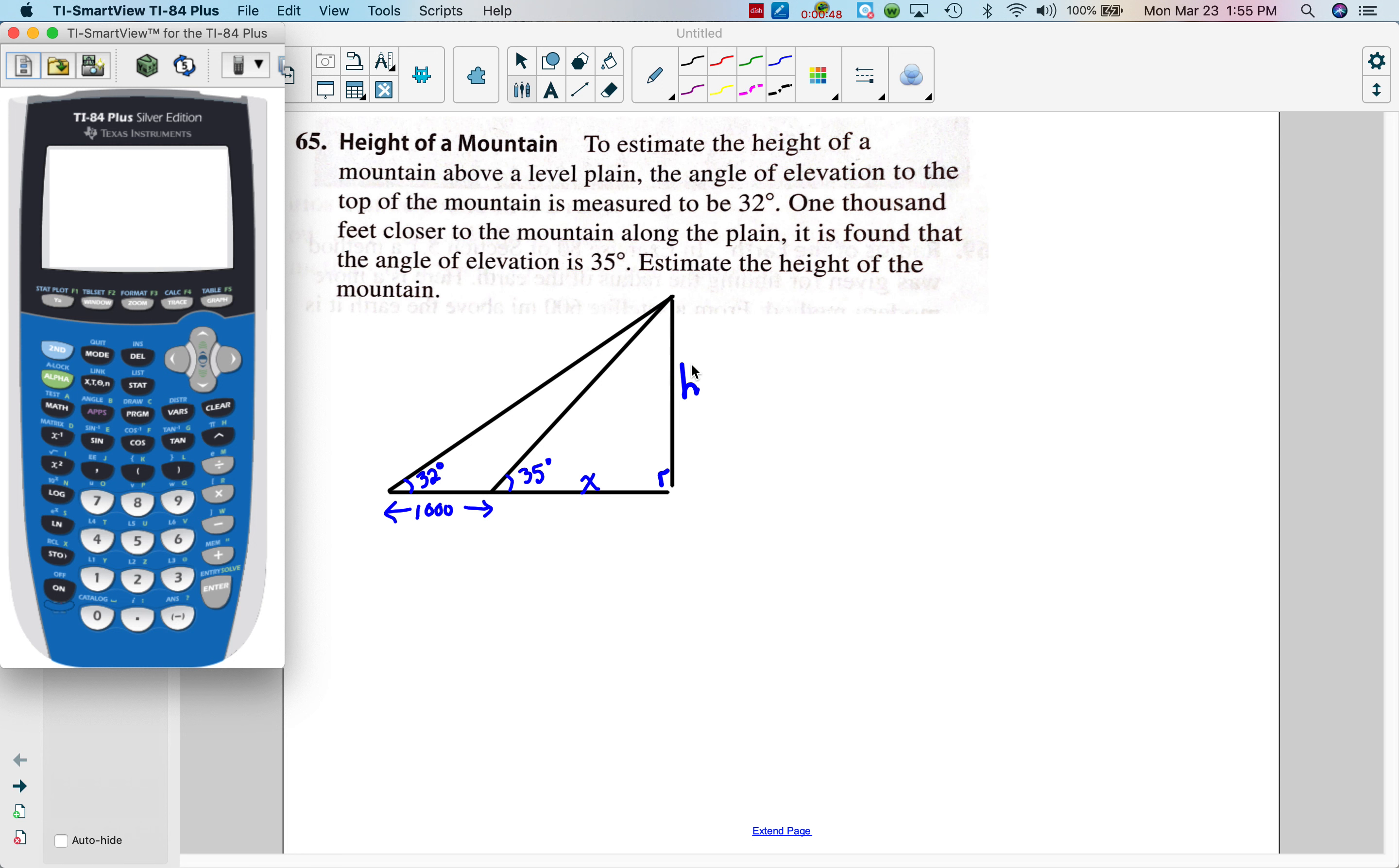Now I'm going to need to come up with two trig equations, one dealing with the smaller triangle, one with the larger. So for the smaller one I can say tangent of 35 degrees equals H over X, and for the other one we'll have tangent 32 degrees equals opposite would be H and that adjacent would be a thousand plus X, or I'm going to put X plus a thousand.